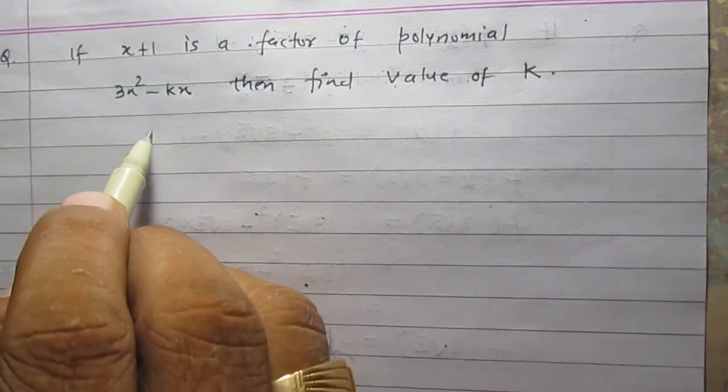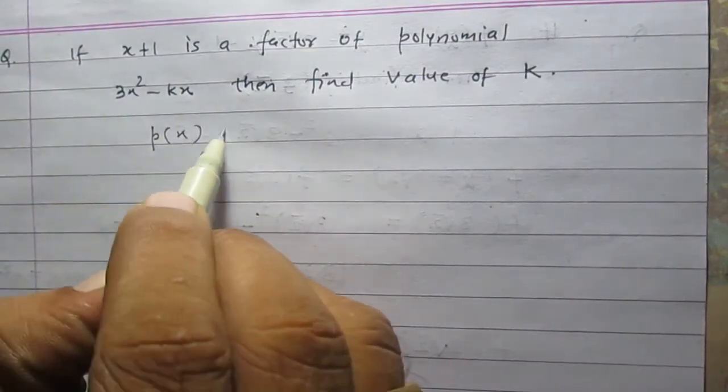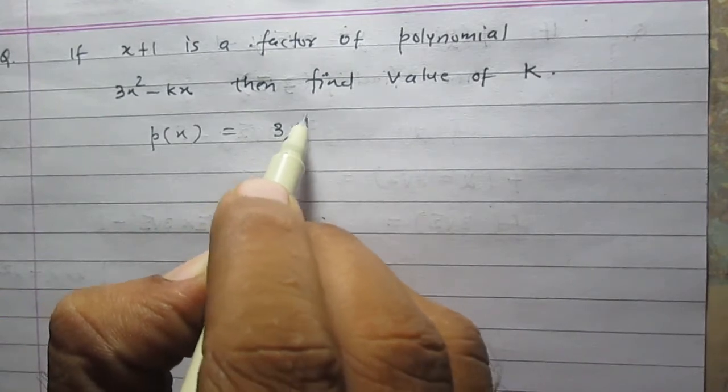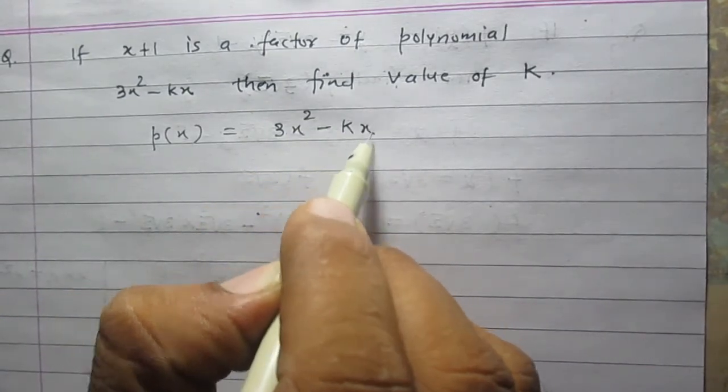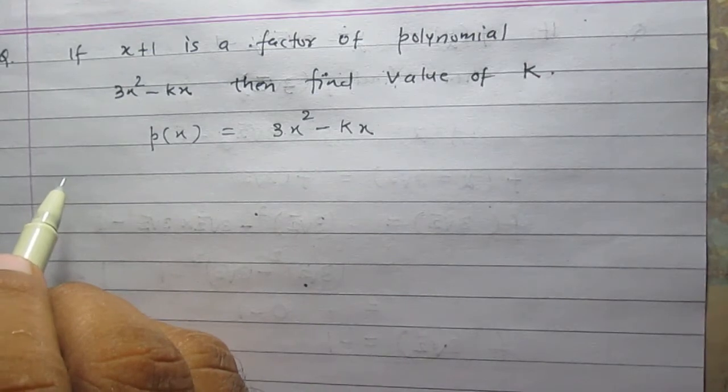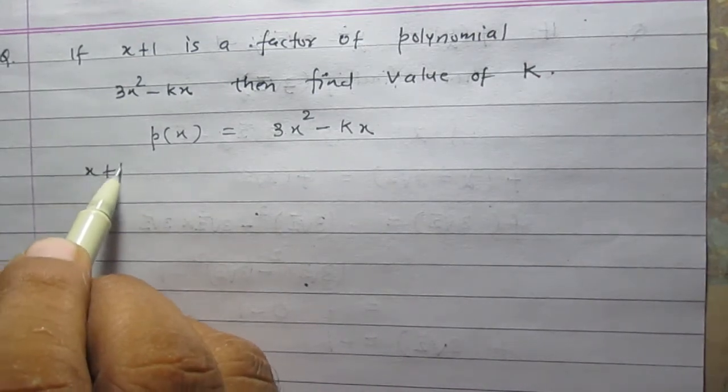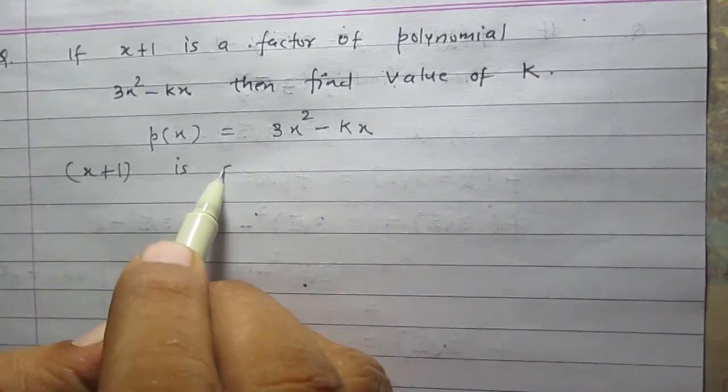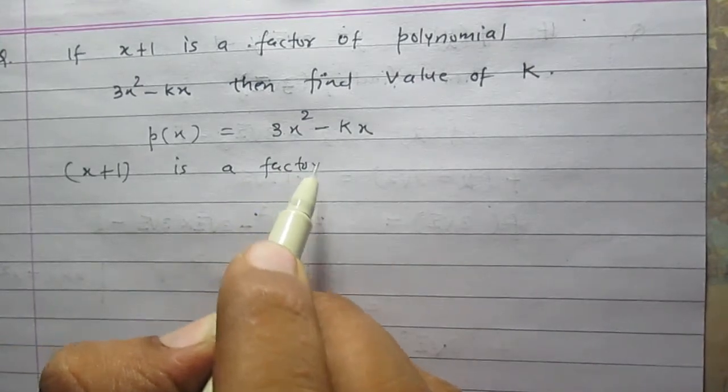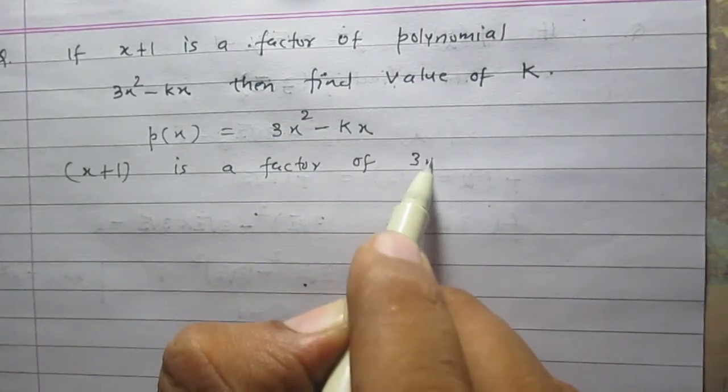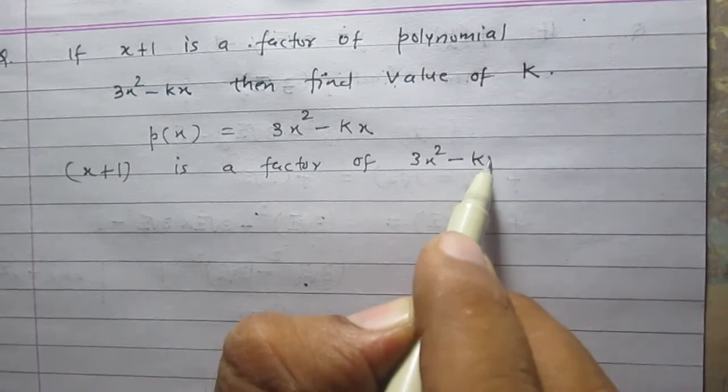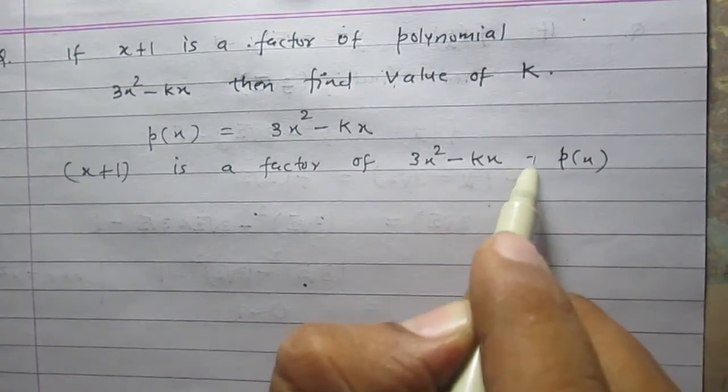Let us consider p(x) = 3x² - kx. We are given that x+1 is a factor of 3x² - kx, or you can say p(x).